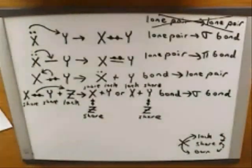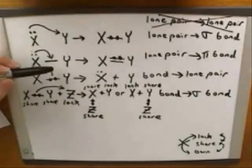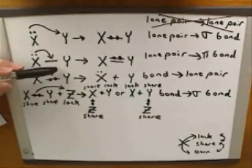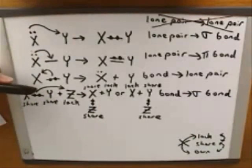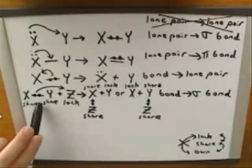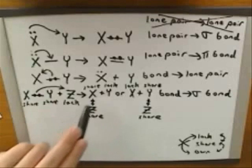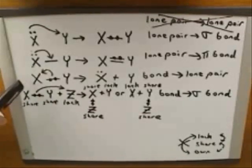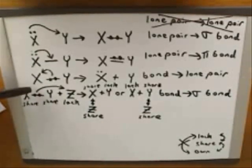How do we interpret the tail of this arrow? Well, it tells us that X is losing its bond with Y. And that's what happened — X lost its bond with Y. And how do we interpret the tail of this arrow? Well, this also tells us that X is losing its bond with Y. It's possible that X might gain a new bond with a new atom Z, but X is definitely losing its bond with Y here.